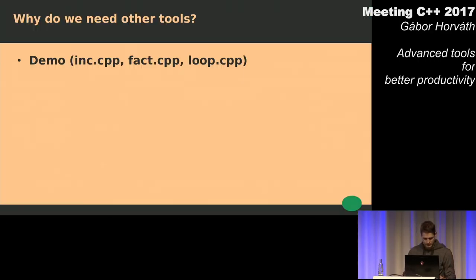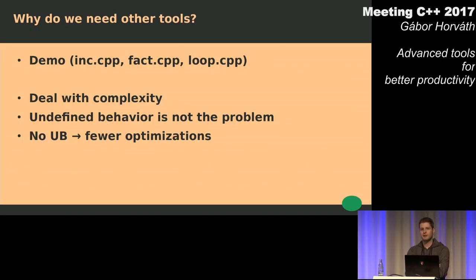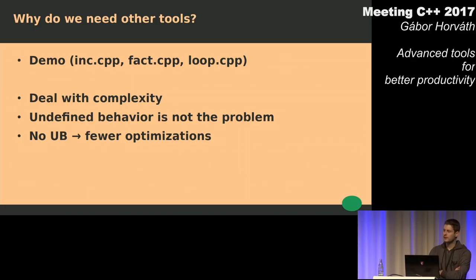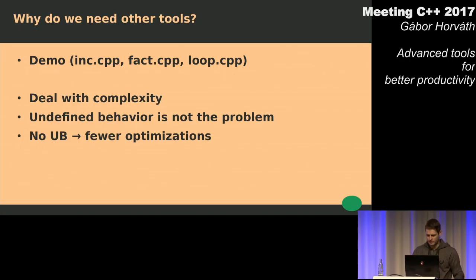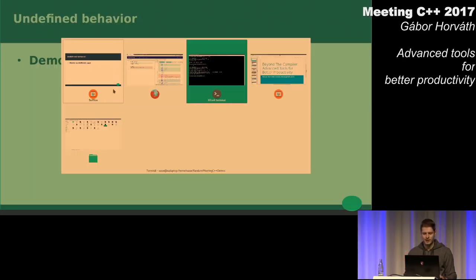So, basically, we need tools to deal with all the complexity of the language and the problems that we face. The problem is not the undefined behavior itself, because if we would define everything, then we could have much fewer optimizations. So basically, the solution is to find what is causing undefined behavior in our programs, and we need tools for that. Let's have a motivating example of why it is really hard to debug undefined behavior.